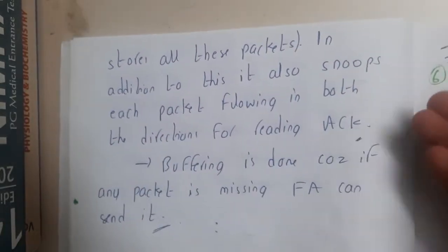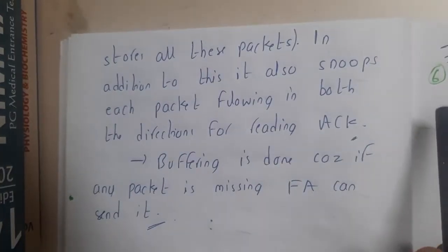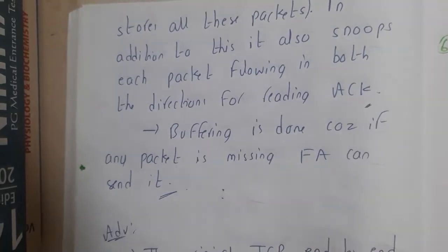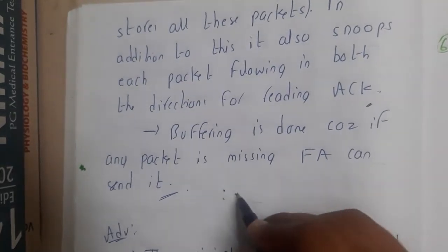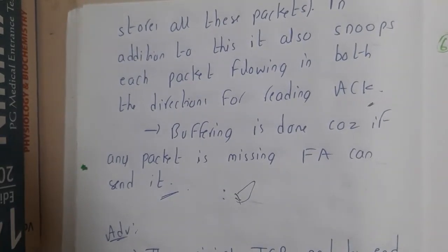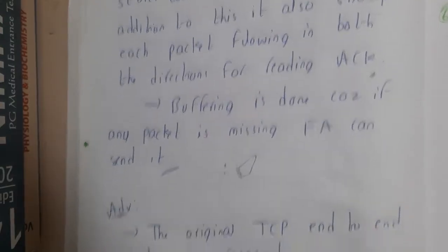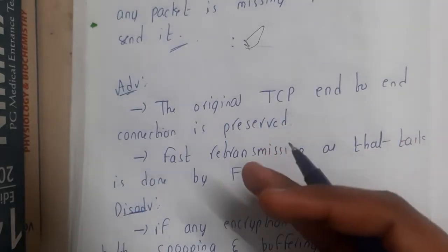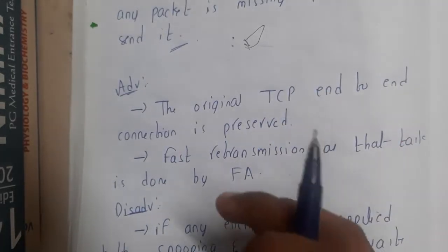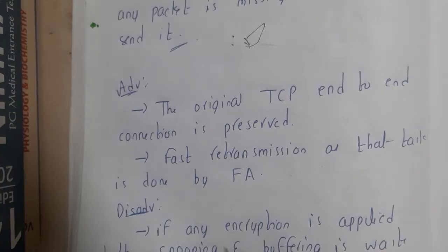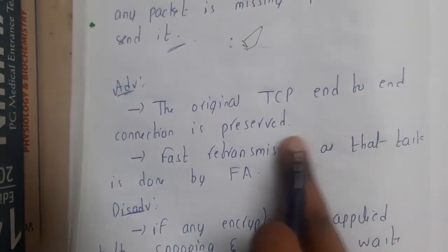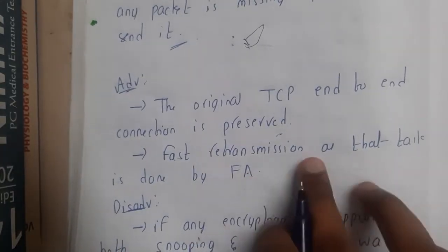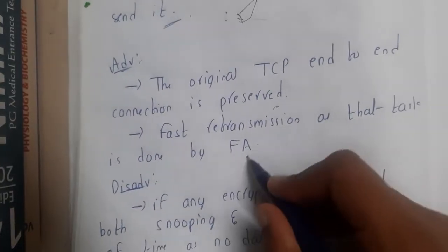The foreign agent observes whether packets are being sent properly and whether acknowledgements are received. The buffer is maintained so that if any packet is missing, it can directly resend it. The advantages are: we are not making any drastic changes to TCP — just adding and updating parts. The original TCP end-to-end connection is preserved, and faster retransmission is possible since data is stored in the foreign agent's buffer.